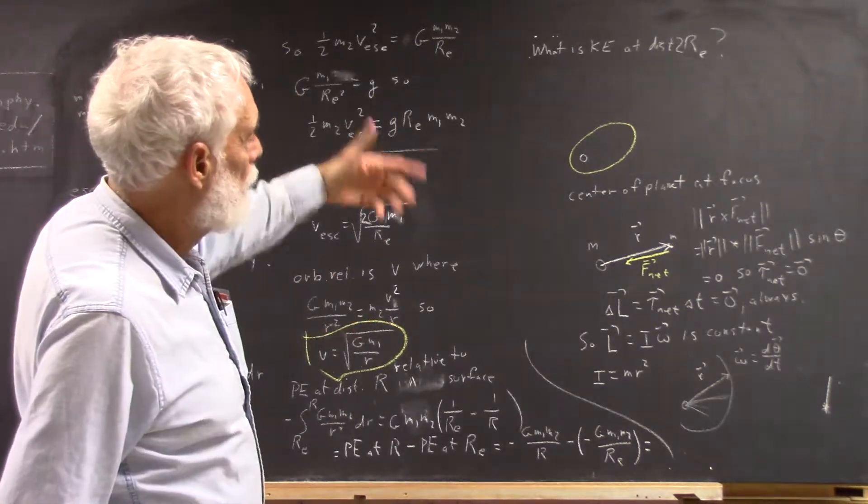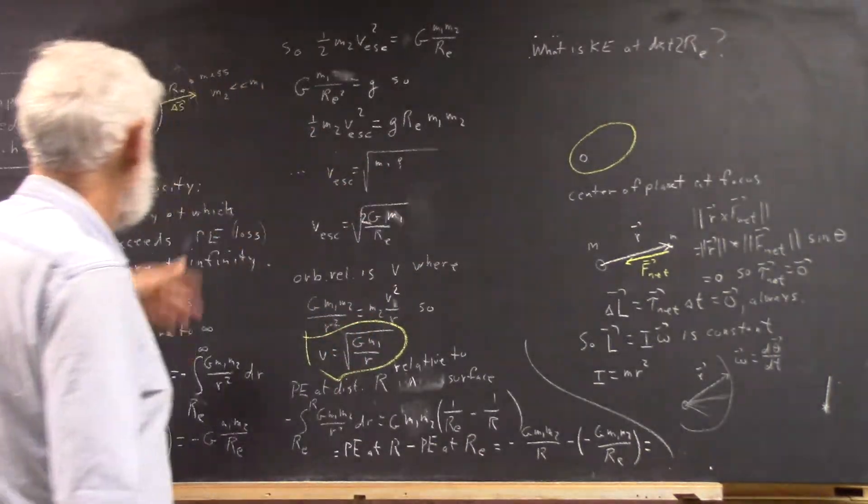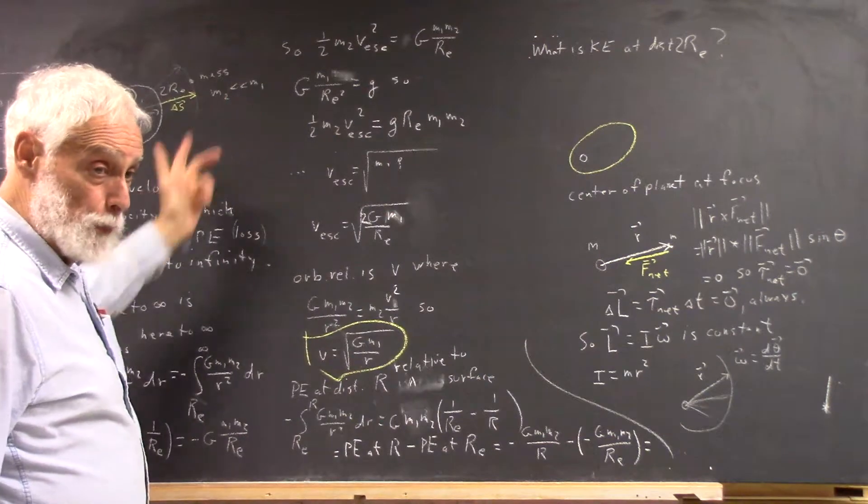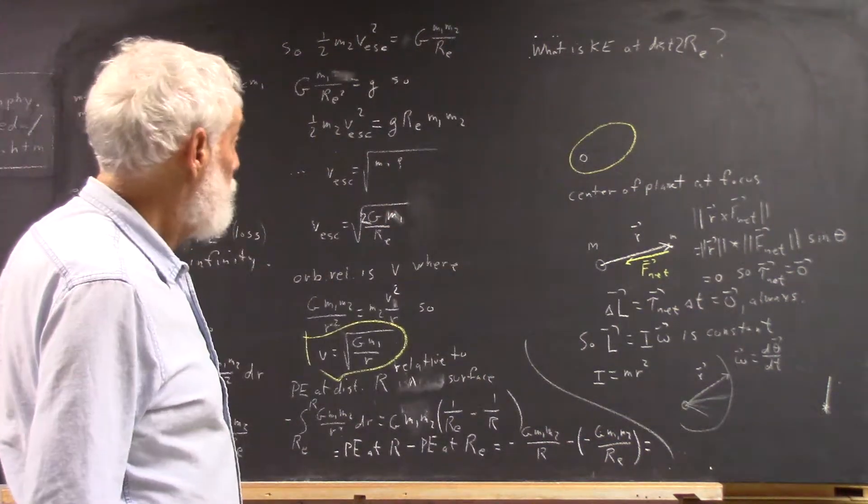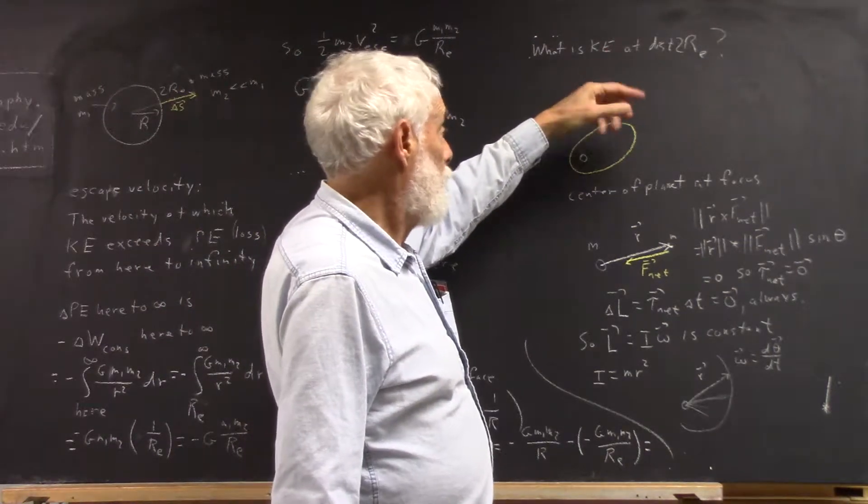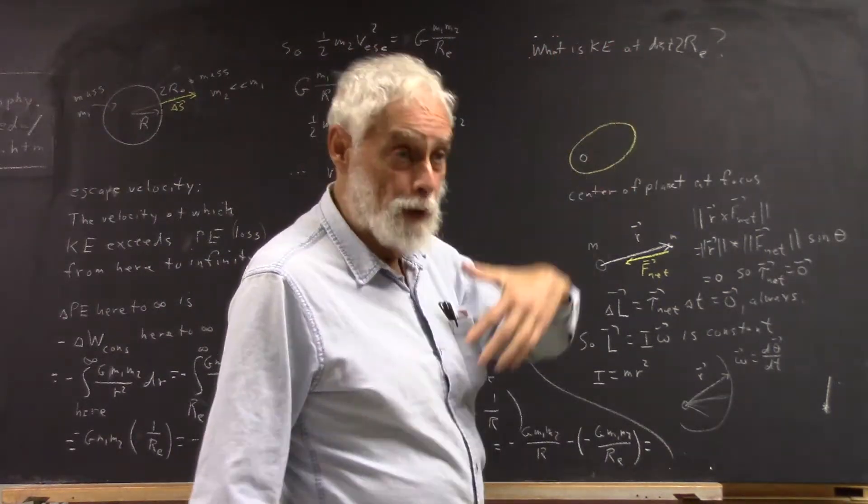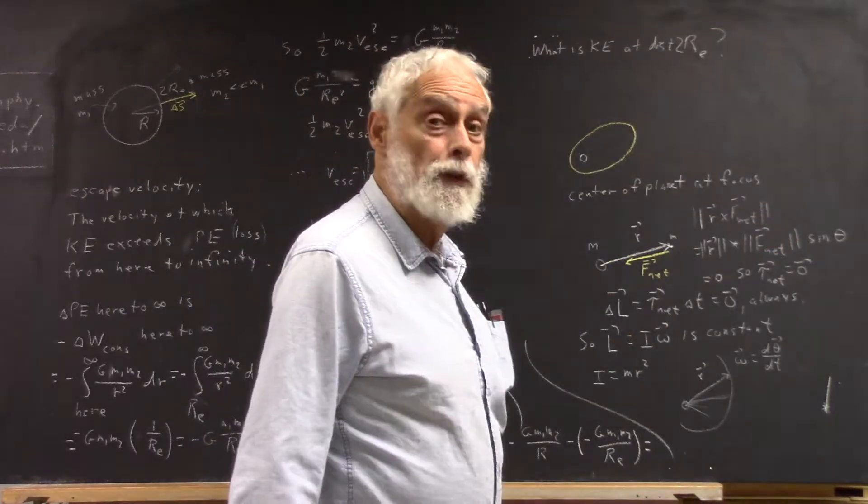But having already been asked what's the escape velocity, what's the kinetic energy, and so forth, what's the change of potential energy from here to infinity, it becomes interesting to consider the question of how much potential energy change we have between here and distance double the radius of the earth.